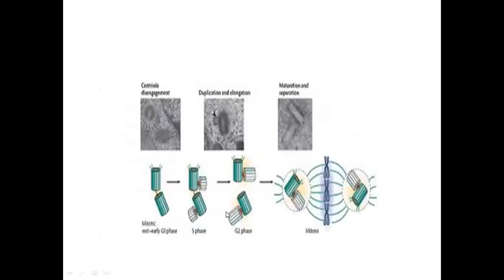To summarize the role of centrioles during cell division: during interphase they start multiplying and become two in number; by the end of prophase they move to the poles and result in formation of the spindle fiber microtubules, which is essential for segregation of the chromosomes. That concludes the discussion on the structure and functions of the centrosome. Thank you.